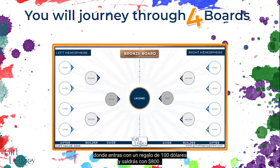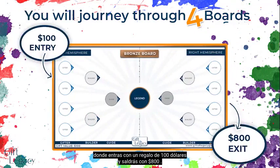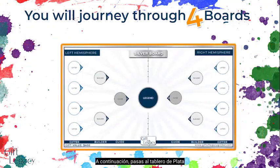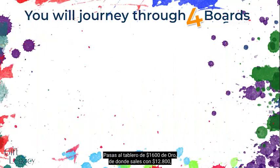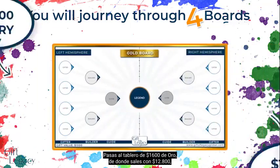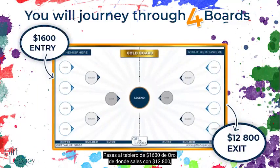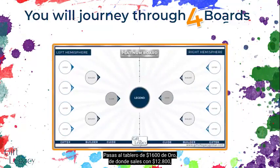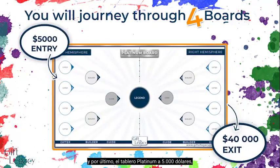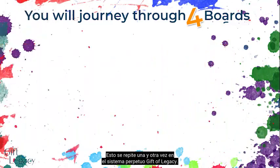Gifting is always peer-to-peer — you gift directly to other members in the community with no middleman or third party. You will journey through four boards: starting at the bronze board where you enter with a $100 gift and exit with $800; then the $400 silver board where you exit with $3,200; the $1,600 gold board where you exit with $12,800; and finally the platinum board at $5,000 where you exit with $40,000. This repeats over and over again on the Gift of Legacy perpetual system.